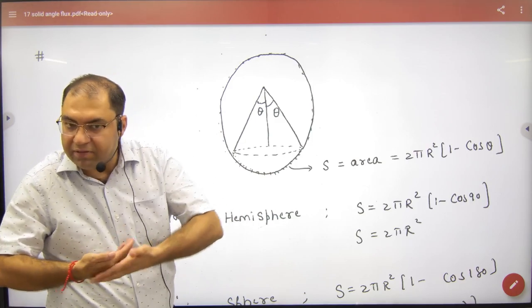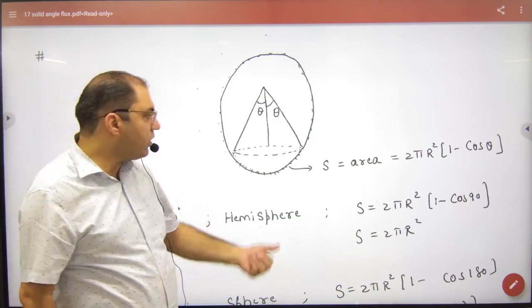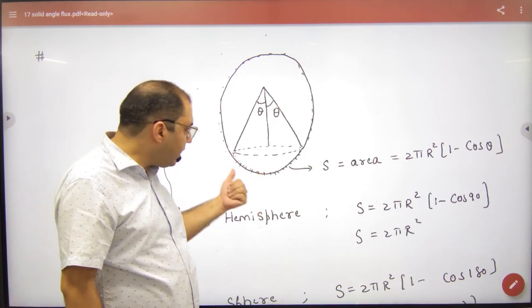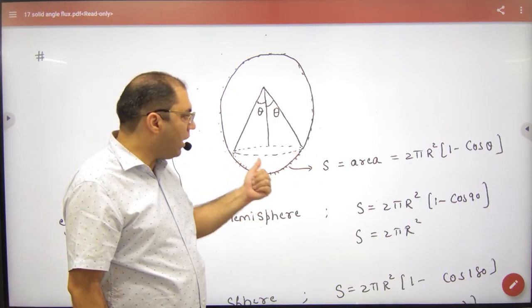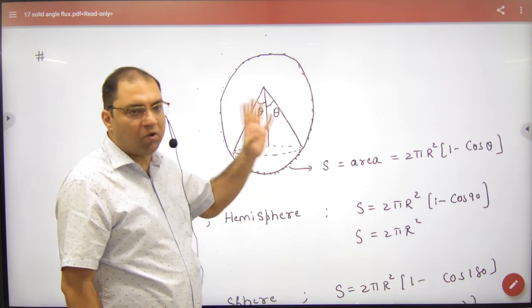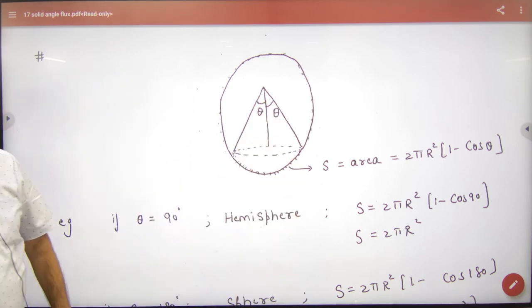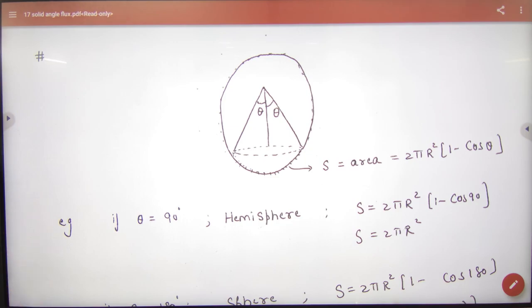If you want to find the surface area, note this formula in your register. Surface area will be 2πr²(1 - cosθ). The total surface area of a sphere is 4πr².